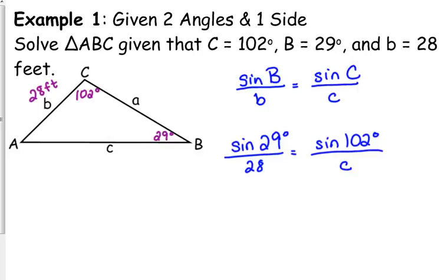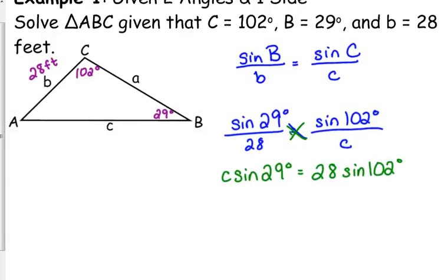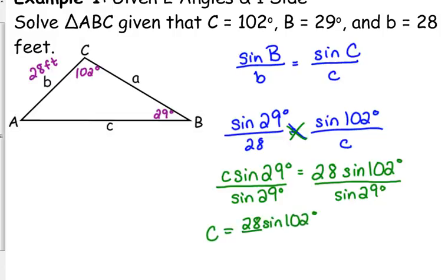Now, how do we solve equations when we have two fractions equal to each other? Cross multiply. Okay, we are going to cross multiply. So we get c times the sine of 29 degrees is equal to 28 times the sine of 102 degrees. Before I type anything into my calculator, I'm going to completely isolate my c. So I'm going to divide both sides by the sine of 29 degrees. So my exact expression is c is equal to 28 sine of 102 degrees over the sine of 29 degrees.